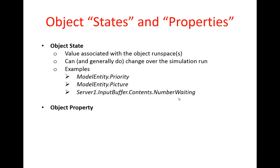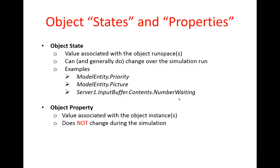Object properties, on the other hand, are also values associated with the object instance or instances. However, they do not change during the simulation run. Object properties are set at the beginning of the simulation run and cannot change as the system changes or as simulation time evolves. Examples include model entity initial priority, which is set at the beginning of the run — the initial priority is a property and cannot change, whereas the state variable model entity dot priority can change during the simulation run. Also, initial capacity of a server is another example of an object property.